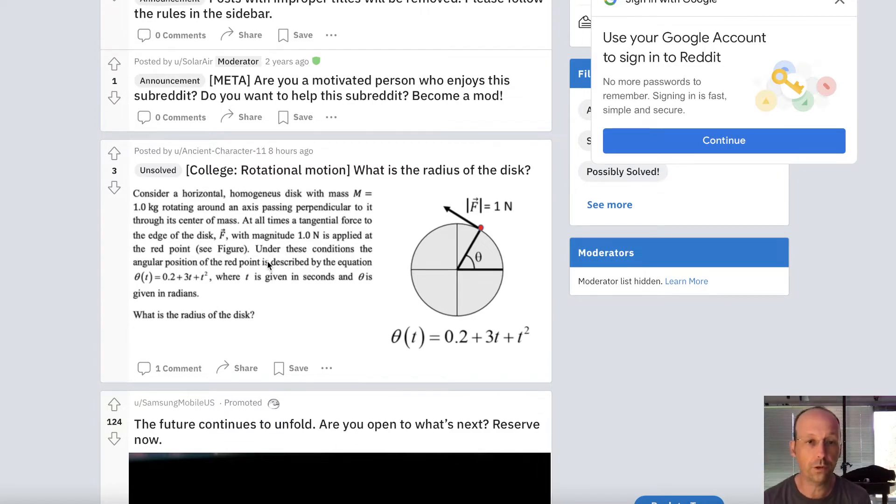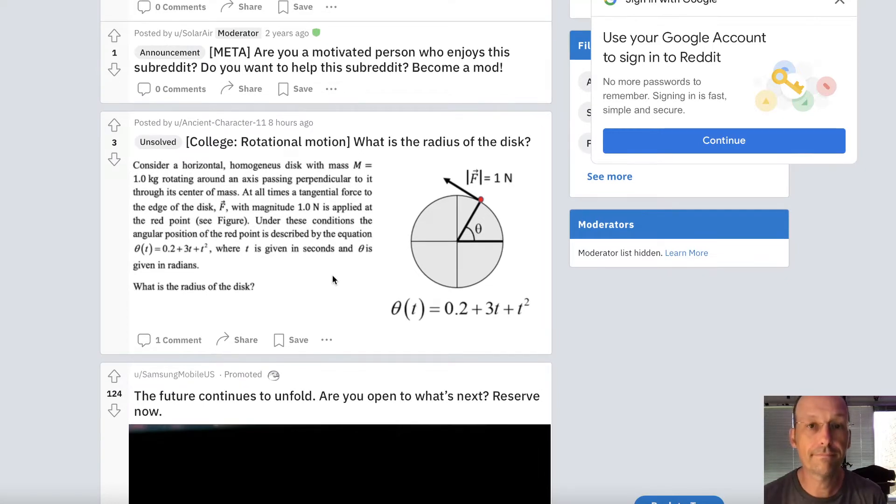So here, let's just look at this first one. College, rotational motion. I'm just gonna solve it if I can. Okay, so I'm gonna read it to you. So we have this disc, and there's a force pushing on it. Consider the horizontal homogeneous disc with a mass of one kilogram, rotating around an axis perpendicular through its center, so normal rotating disc.